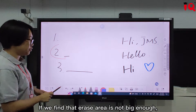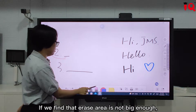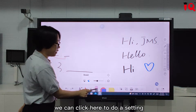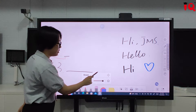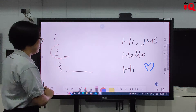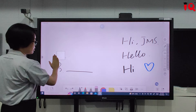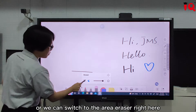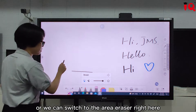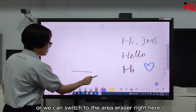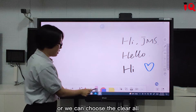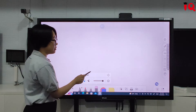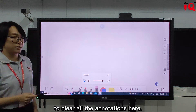If we find that the erase area is not big enough, we can click here to adjust the settings. Or we can switch to the area erase, right here. Or we can choose clear all to clear all the annotations.